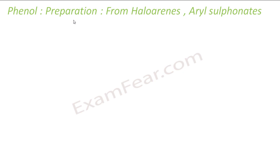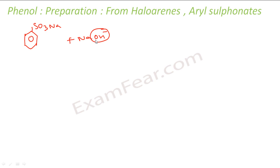The first method is from haloarenes and aryl sulfonates. Let's see the aryl sulfonate first. This is my aryl sulfonate SO₃Na. What I do is add OH⁻ — it is a very strong nucleophile — it will replace the SO₃ ion. So it's a substitution reaction. You get OH plus Na₂SO₃. Pretty easy reaction mechanism.